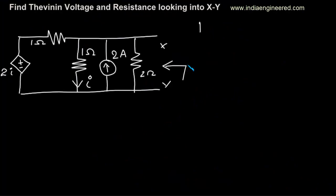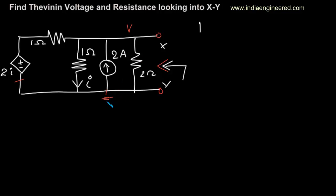In this question we are asked to find the Thevenin voltage looking into terminal XY. We have a dependent source here, so first we will see how to find the Thevenin voltage, then the approach for finding the Thevenin resistance. To find the Thevenin voltage, the procedure is to open-circuit the terminals, which is already done here. We have to find the voltage across these two terminals — we assume this voltage to be V or Vth, and this node to be ground at zero potential.